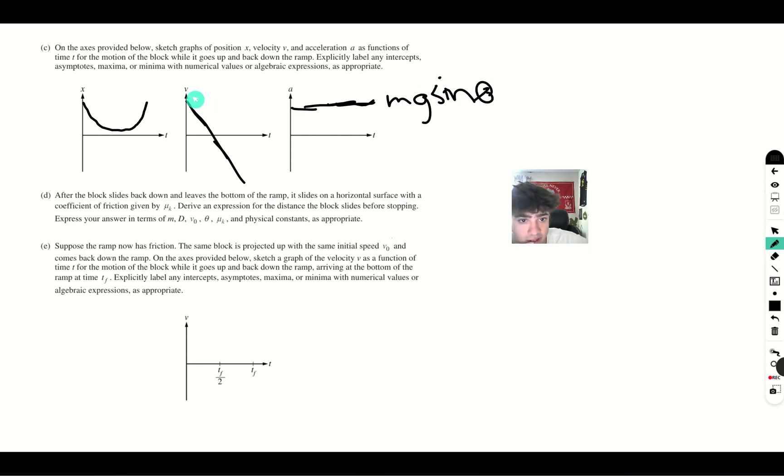This starts at v initial, goes to 0, and then goes to negative v initial. Because when it reaches the bottom of the ramp again, it's going to have the same speed, just in a different direction.